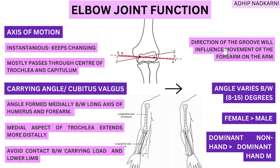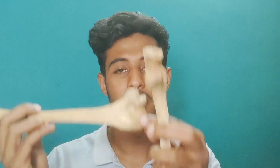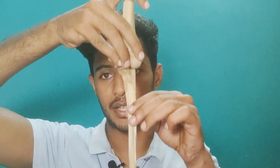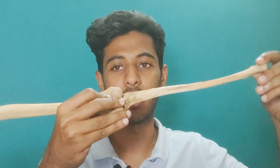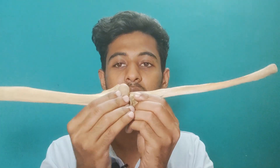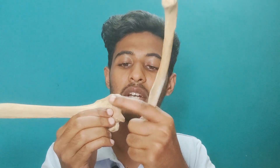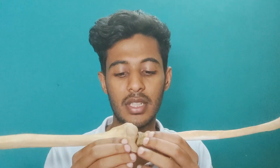Apart from the axis, the direction of flexion at the elbow joint is also influenced by the direction of the groove. The trochlea is slightly bigger on the medial side, which means the ulna is slightly angulated upwards rather than exactly vertical. The shape of the articulating surfaces is what gives the elbow joint its direction of movement.